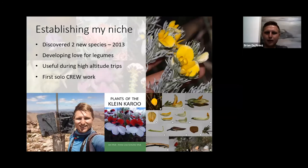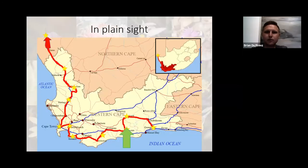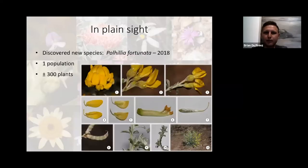Now we head a little bit down towards the coast. Interesting enough, just a month before finishing my MSc on Podalyria, I happened to stumble across a brand new species literally about 20 meters off a gravel road. The species is now being described and the paper will hopefully be published soon. It is literally only known from one population of about 300 plants — thankfully not otherwise threatened.